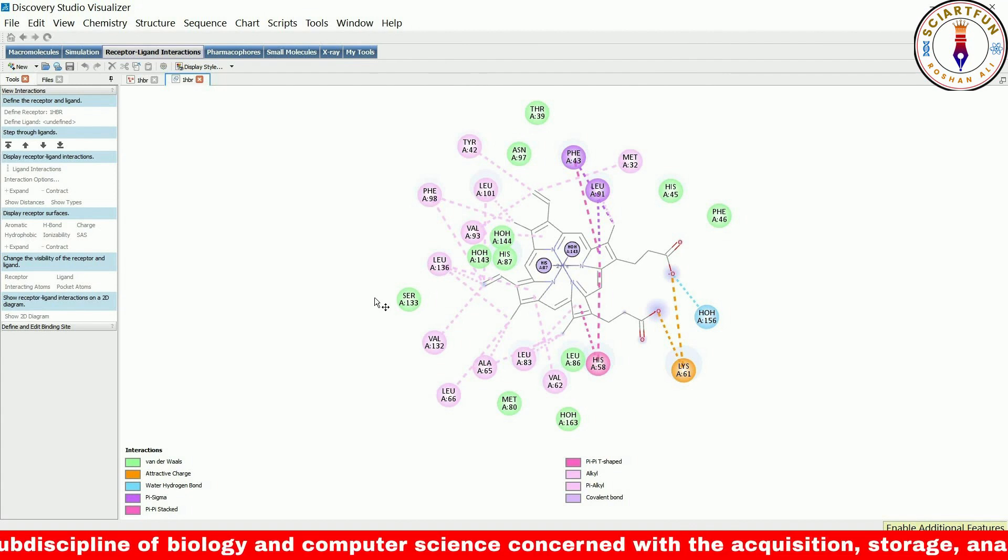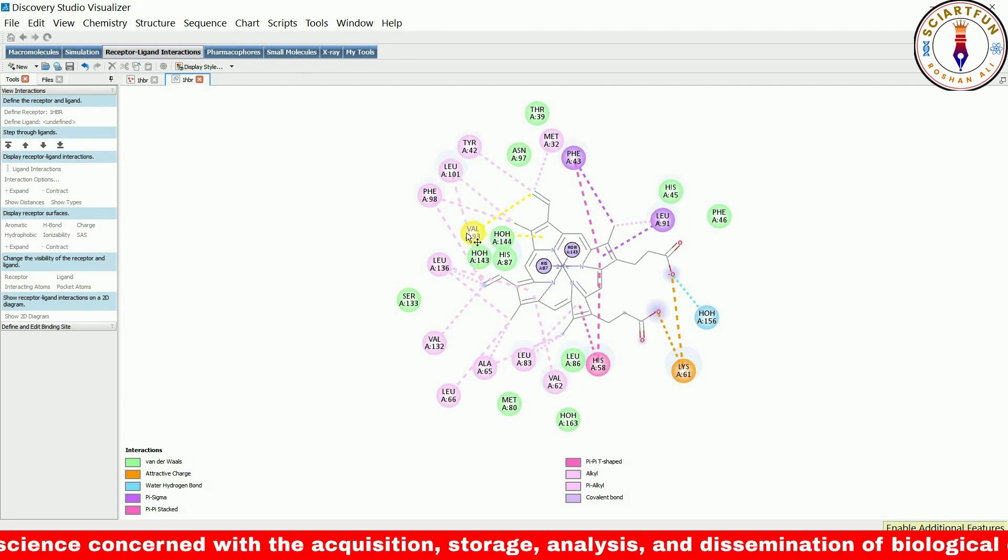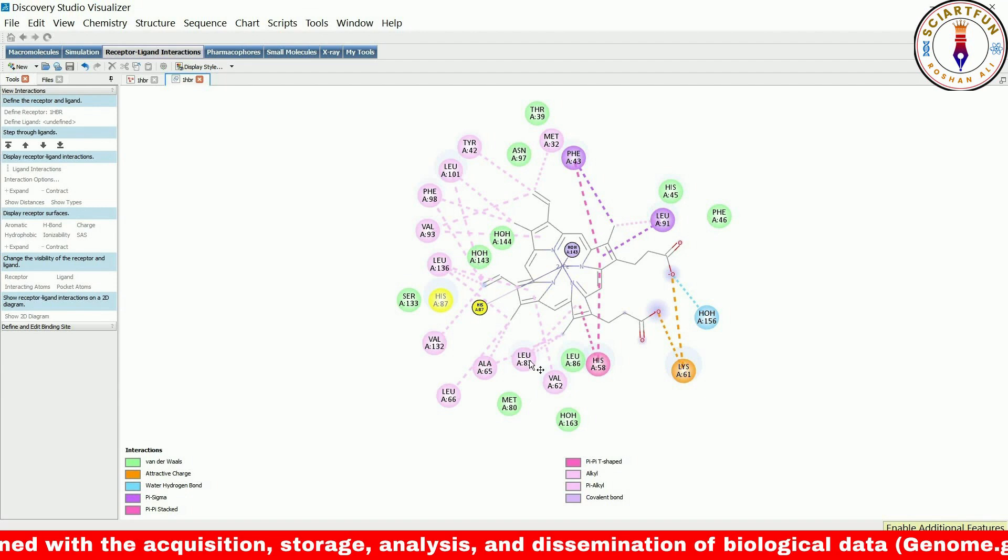The dashed lines represent the interactions. To make the structure more clear, we can rearrange the residues by first selecting them with a mouse click and then moving them while holding down the control plus mouse button.